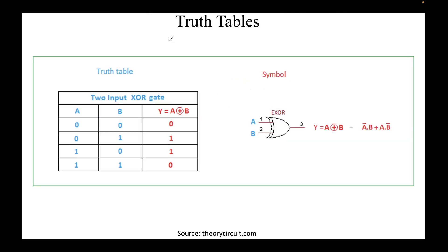This is the symbol of an XOR logic gate. The two inputs are A and B and the output is Y. Algebraically, XOR is represented as A-bar·B plus A·B-bar, where dot is multiplication and bar is negation. This is the truth table for this XOR symbol with two inputs.